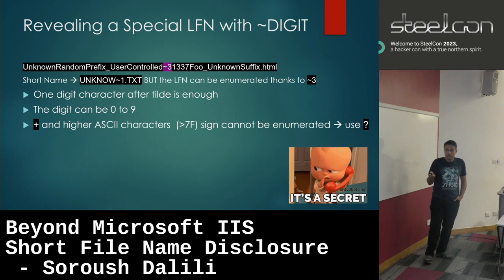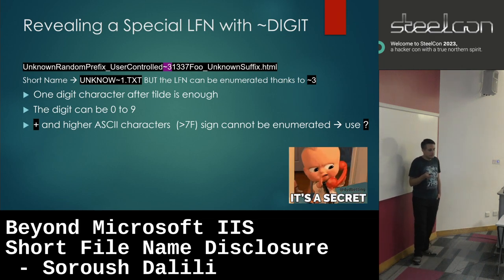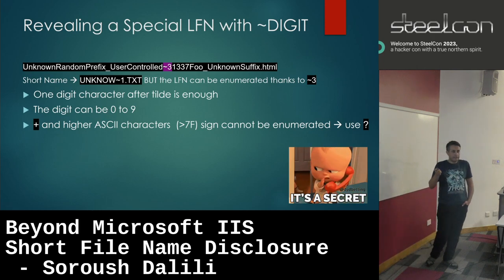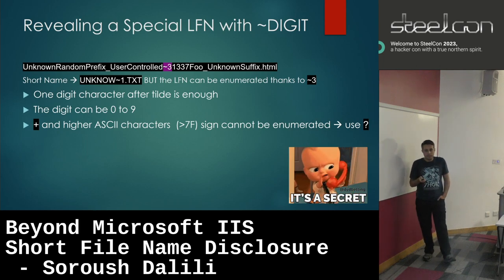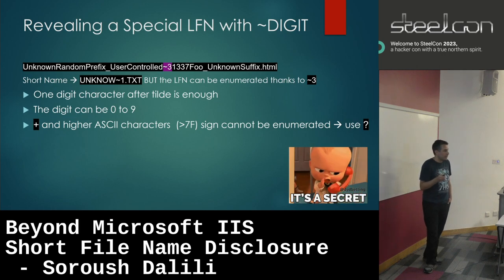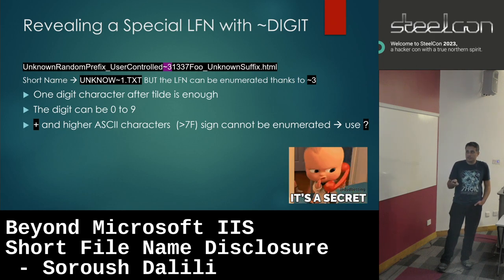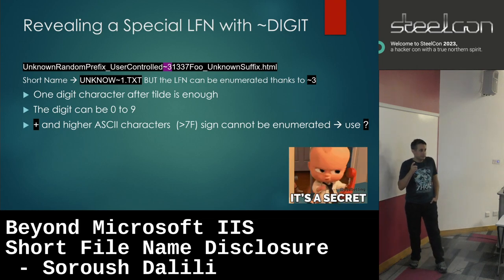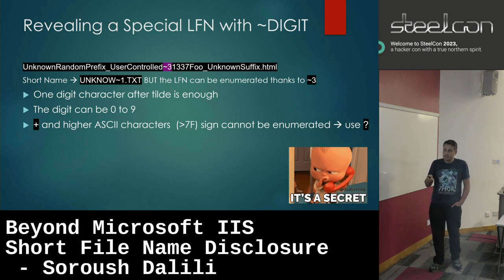This is 2023 stuff. Back at MDSEC, a colleague asked me: what happens if a file has a tilde in it and is long? Is Windows going to create a short name? Yes. But it made me think — what does IIS do about this? Can I enumerate the whole name or just the short name? I realized that if a file name has tilde and a number from 0 to 9 anywhere in the file name, you can enumerate the whole full file name. The method is exactly the same — just don't stop after the sixth character.